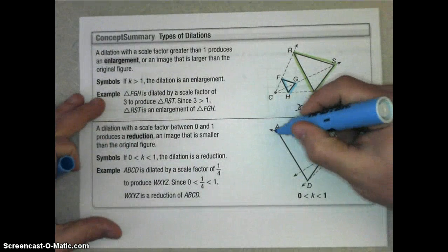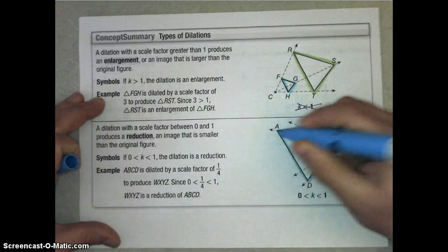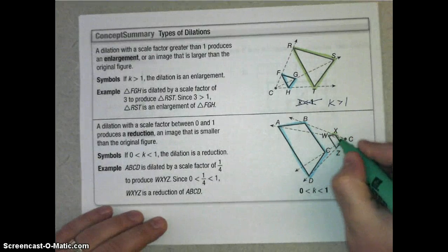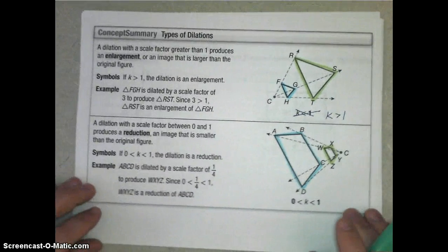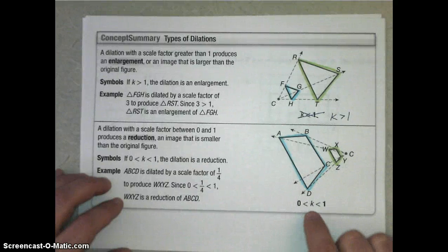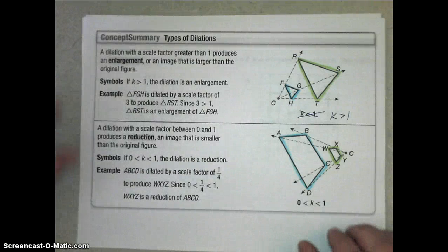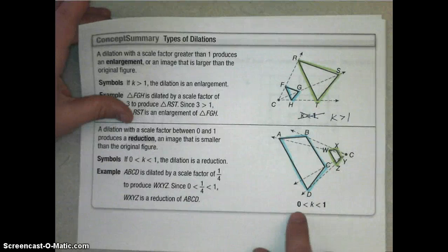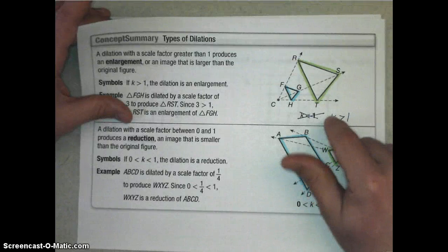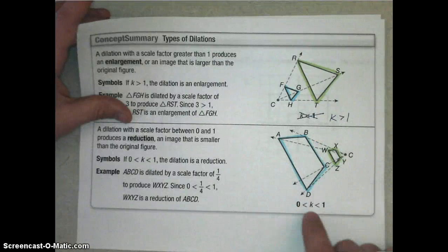If we start with trapezoid ABCD and go to trapezoid WXYZ, that's a reduction. The scale factor is one-fourth — this new image is one-fourth the size of the original. Our scale factor is between 0 and 1. We never have a negative scale factor, which is why the condition is written as 0 < K < 1 rather than just K less than 1. Here the scale factor is 3 (greater than 1), and there it's one-fourth (less than 1).